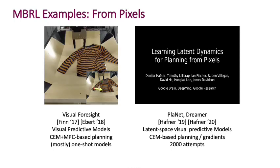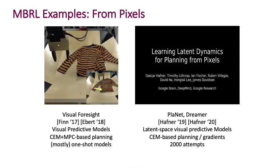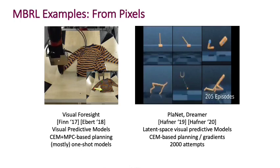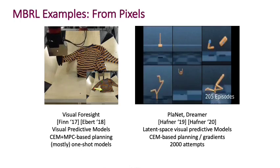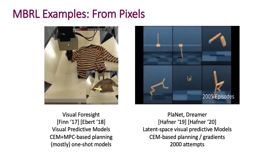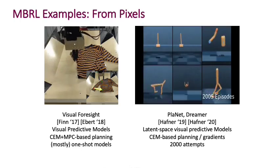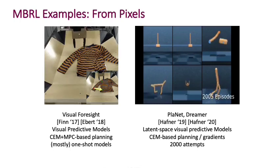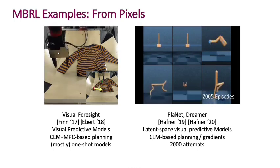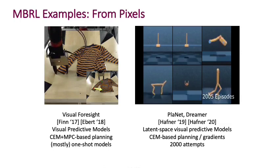Here is the task of learning how to control different simulated robots, including a humanoid and a half-cheetah. Over the course of only about 2,000 attempts, it's actually able to learn pretty good policies using model-based reinforcement learning for controlling these.